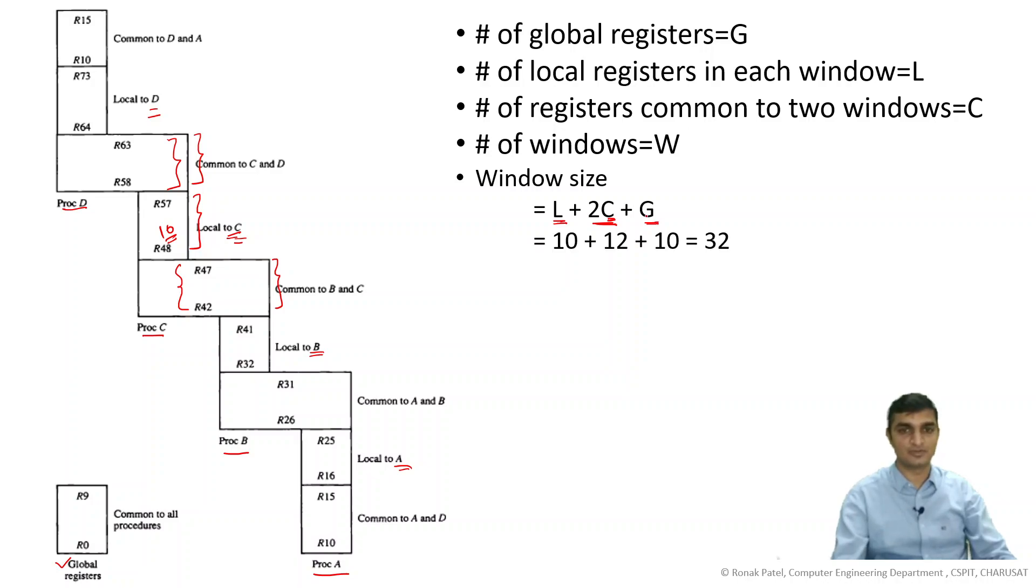C means number of registers common to two procedures, plus your global registers. If you see this, then that is 10 plus 12 plus 10. C is 6 because you can see the common registers on this side is 6, this side is also 6. So 10 and 6 plus this global 10 equals 32 window size. This window size is active at a particular time.